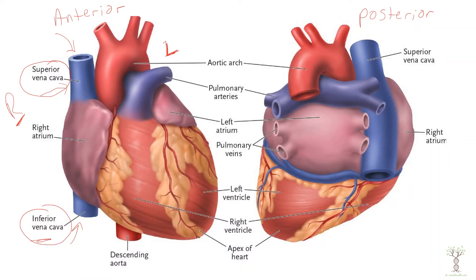The heart has four chambers. It has a right atrium and a left atrium, and it has a right ventricle and a left ventricle. So there are two atria and two ventricles.